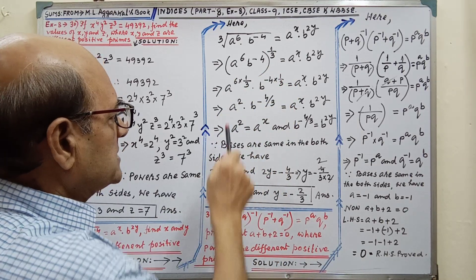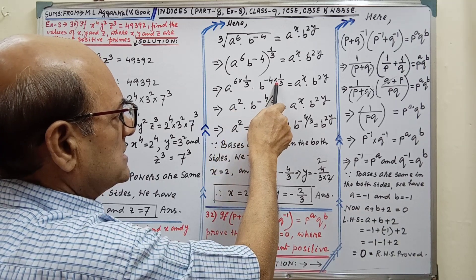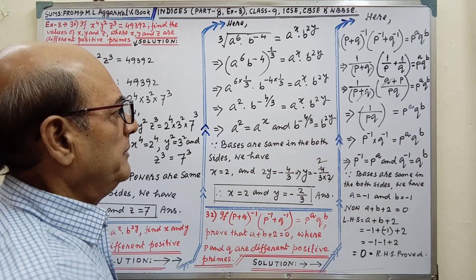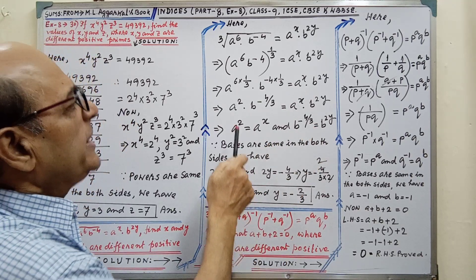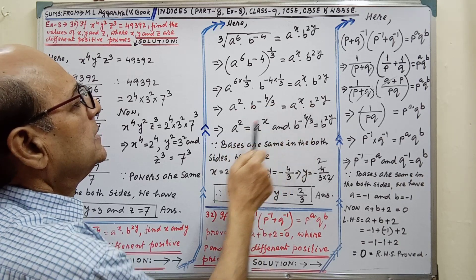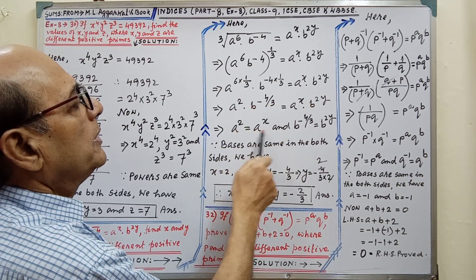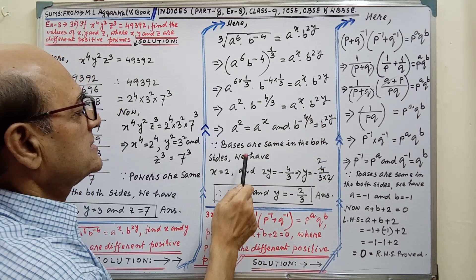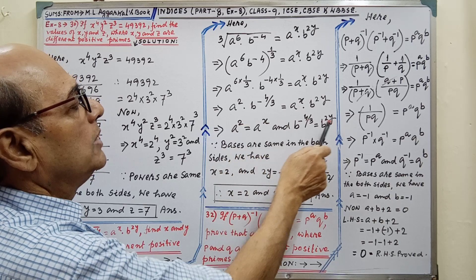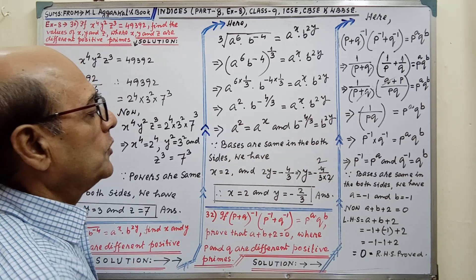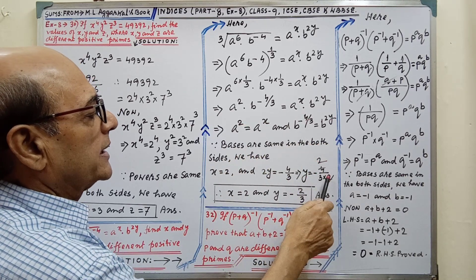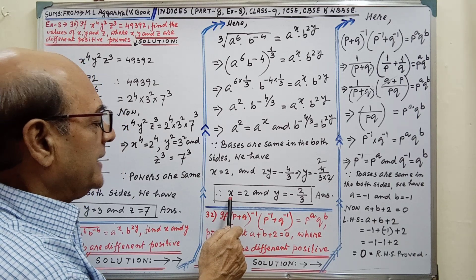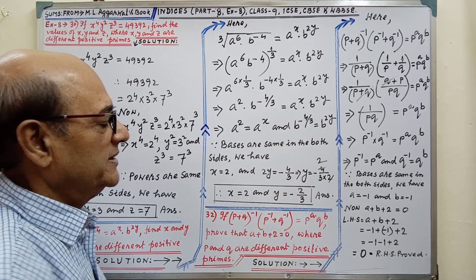Then we have to simplify — this will be cancelled, and it will become a square. By simplifying, we are getting b to the power minus 4 by 3, and it will remain as it is. Bases are the same: a and a, b and b. This is why a square equals a to the power x, and b to the power minus 4 by 3 equals b to the power 2y. Since bases are the same, x equals 2 and 2y equals minus 4 by 3. By simplifying, we are getting y equals minus 2 by 3. Therefore, the value of x is 2 and the value of y is minus 2 by 3. Sum is completed.